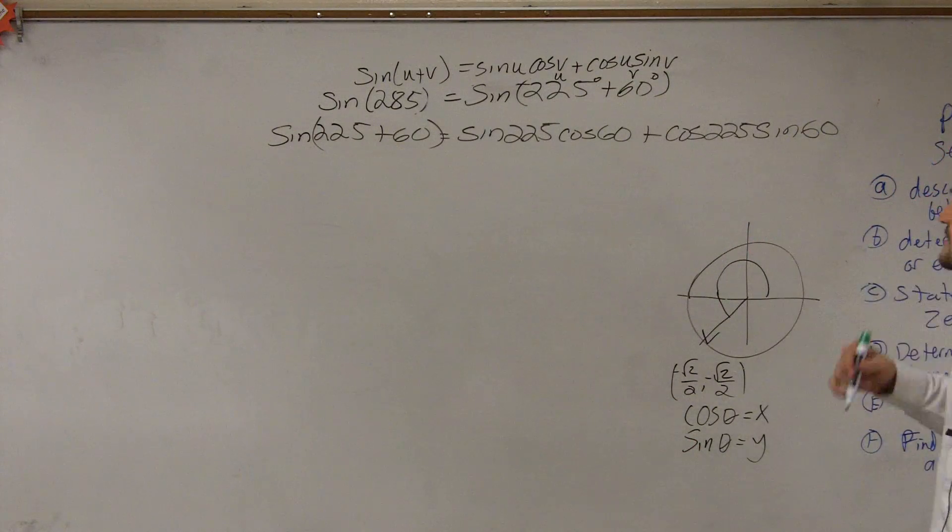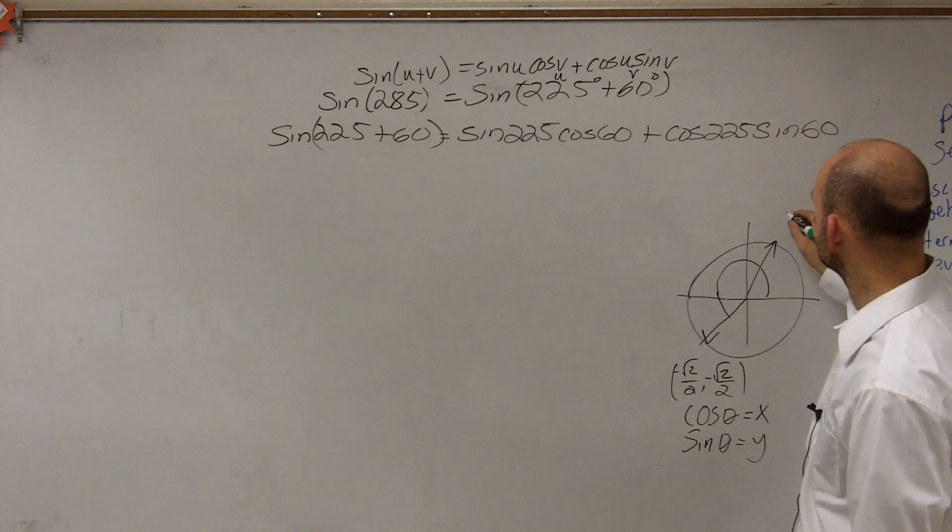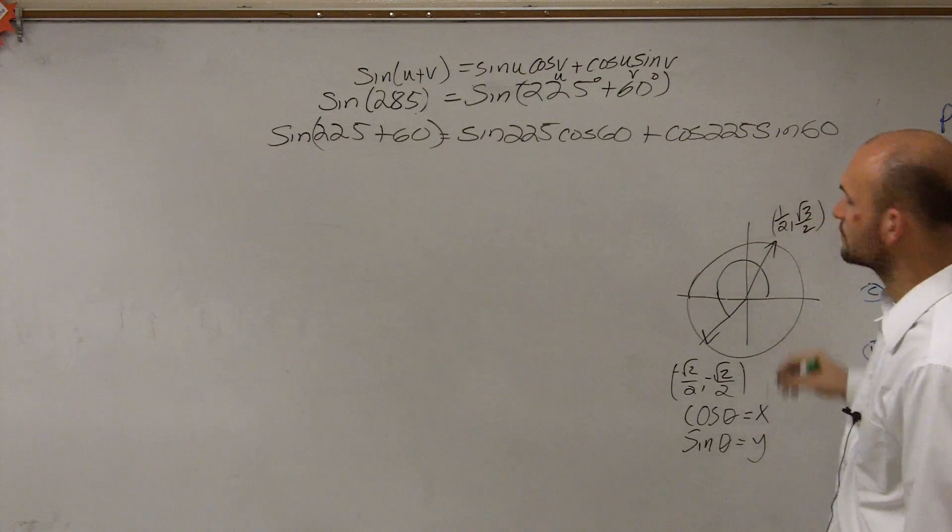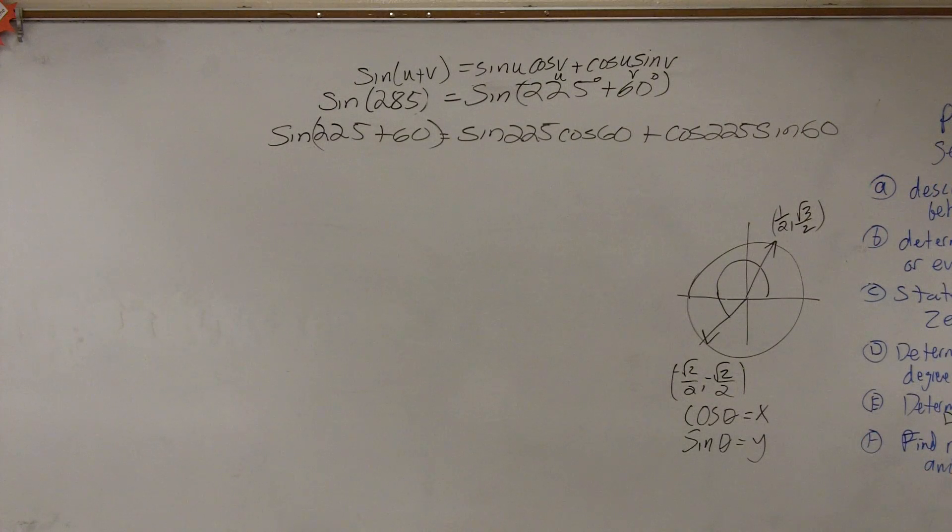Now let's find 60 degrees, which is going to be up here. 60 degrees has a coordinate of 1/2, √3/2. Right? Okay.